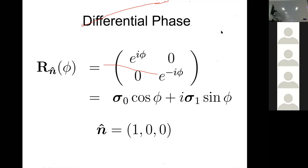That's basically what happens with differential delay in the linear basis. If you were in a circular basis, the first axis would be the Stokes V axis, and differential phase rotations would result in rotation about the Stokes V axis, which would rotate Q into U — identical to rotating your receiver about the line of sight. The N-hat of (1,0,0) comes from the fact that there are only two terms in this sum; that's plus 0 times sigma_2 plus 0 times sigma_3.